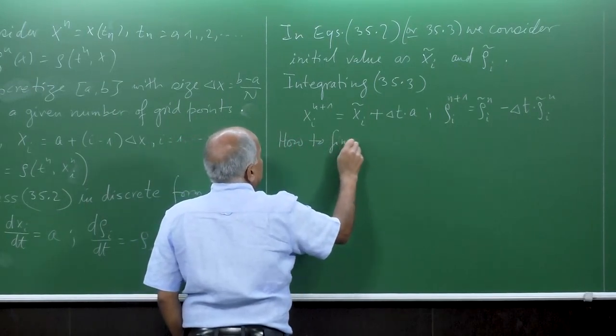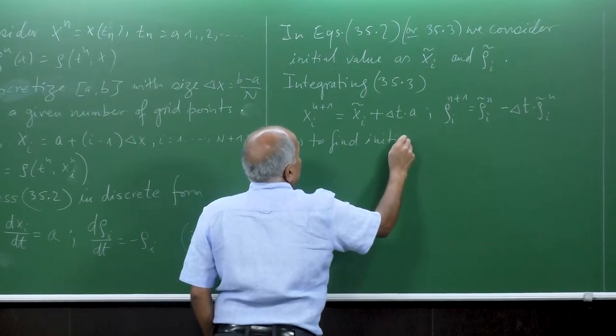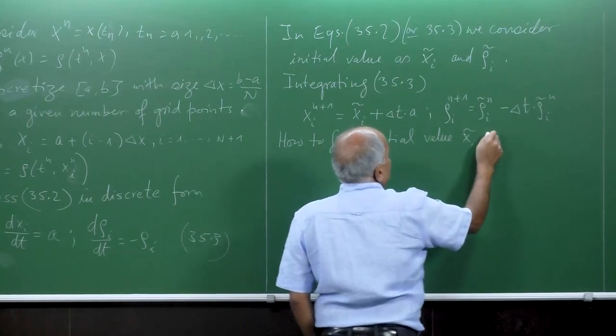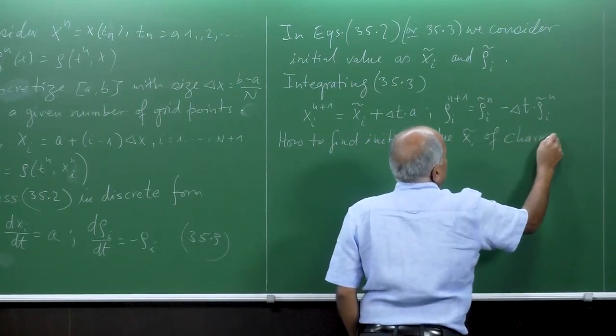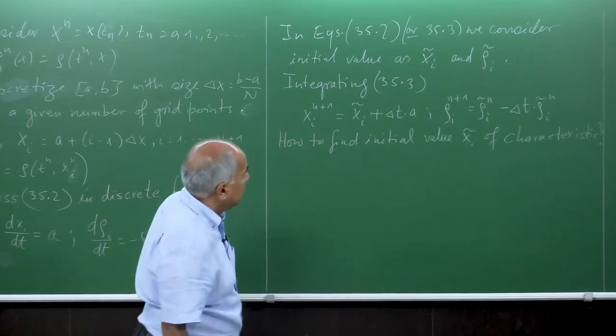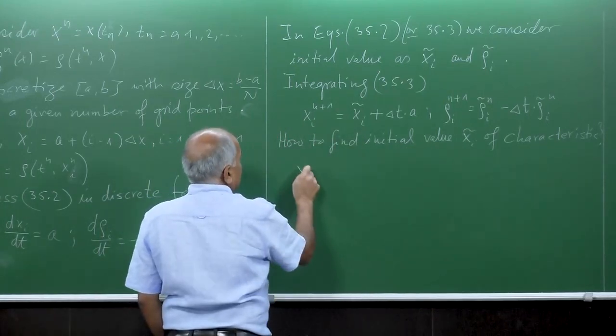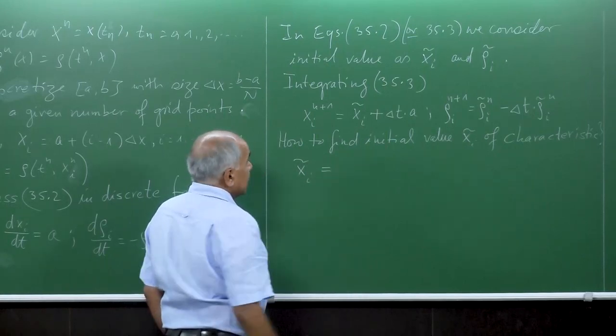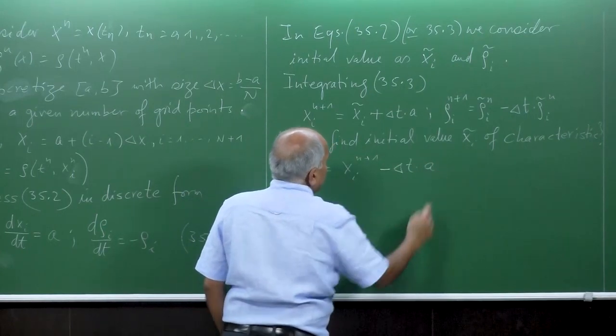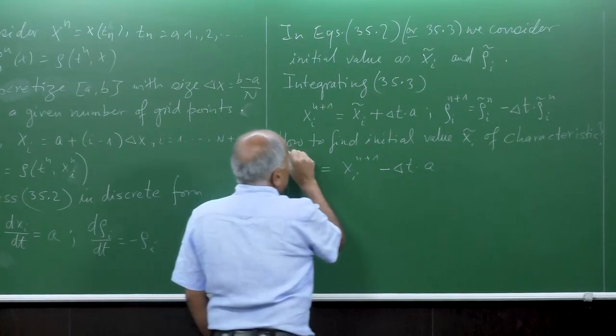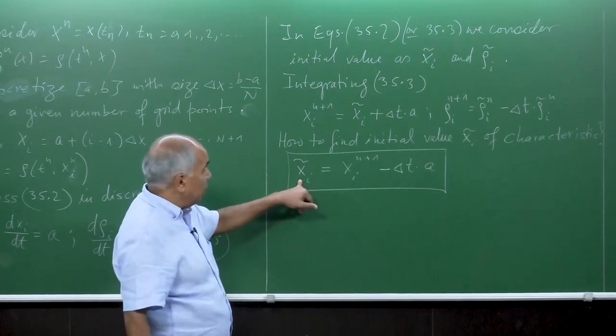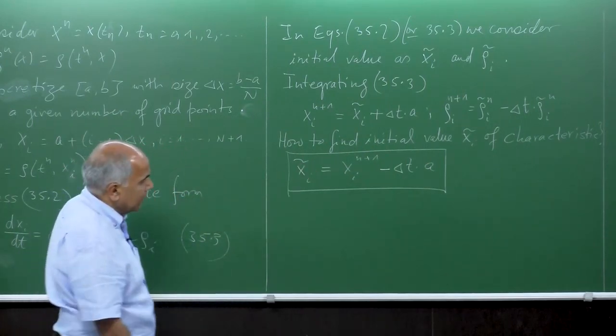So how to find initial value x i tilde of characteristics? Now just take it backwards. So x i tilde we can find this - this is nothing else x i of n plus 1 minus delta t times a. This gives us where the characteristics start.